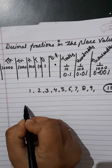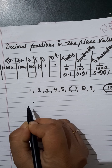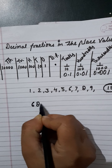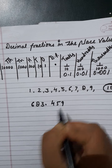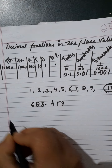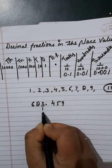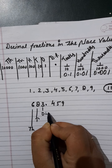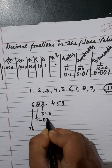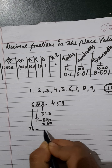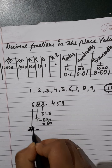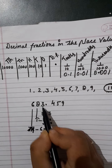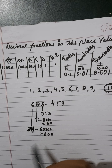Let's take the example of decimal number 683.459, shown in the place value chart. This is in the ones place, this is in the tens place, and this is in the hundreds place. The place value of three is three. Eight multiplied by ten is eighty. Six multiplied by hundred is six hundred. So the place value of three is three, eight is eighty, and six is six hundred.